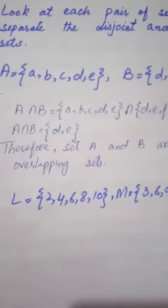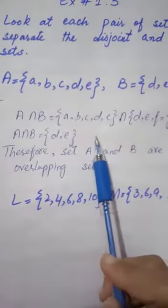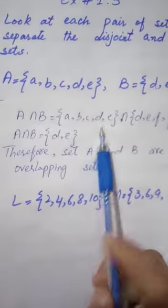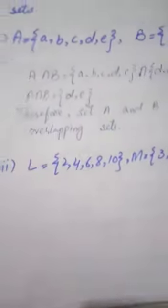These two sets are overlapping sets because there is one element in common. When it doesn't come, it would be a disjoint set. Next, let's see.